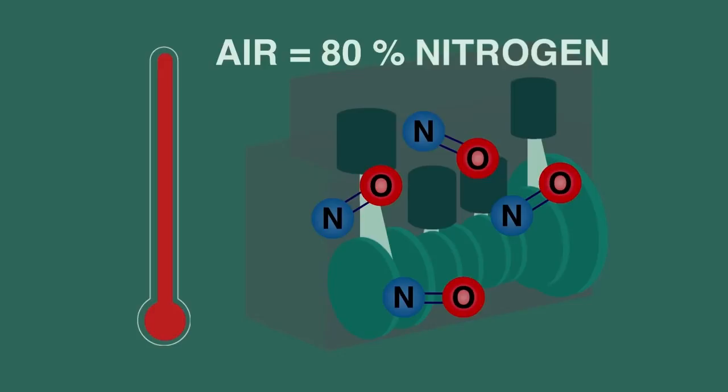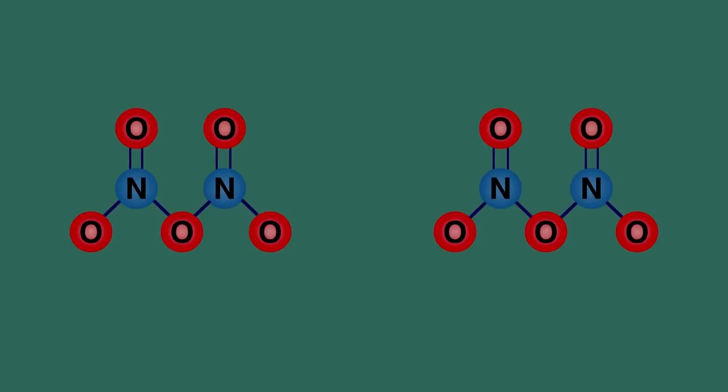Once the oxides of nitrogen are in the air, they react with more oxygen, just like we saw with sulfur dioxide, and dissolve in the rainwater to form nitric acid.